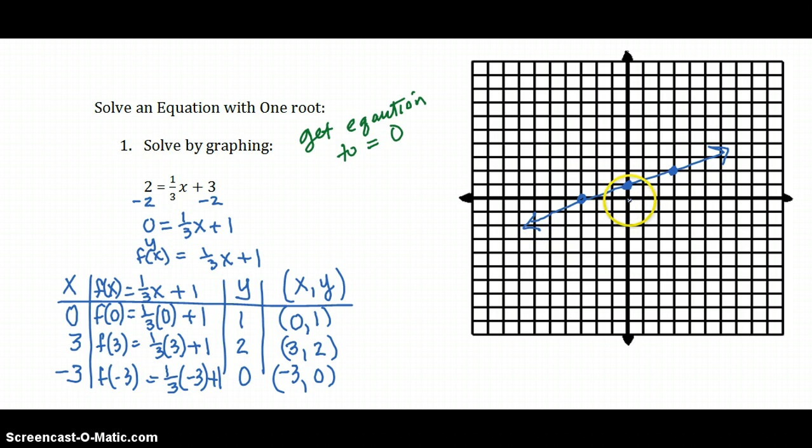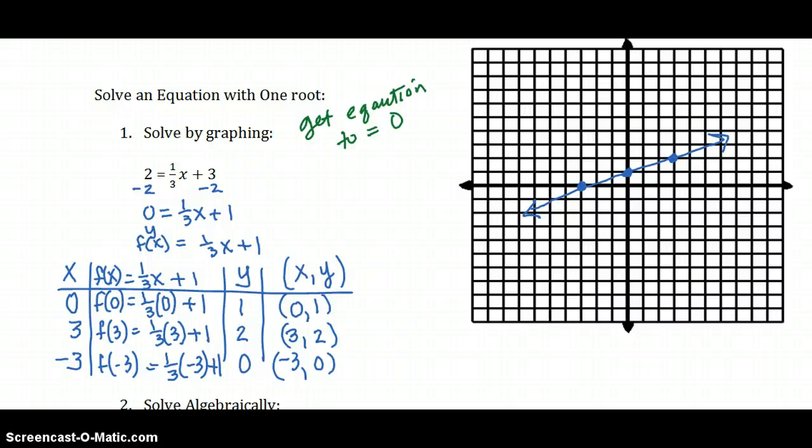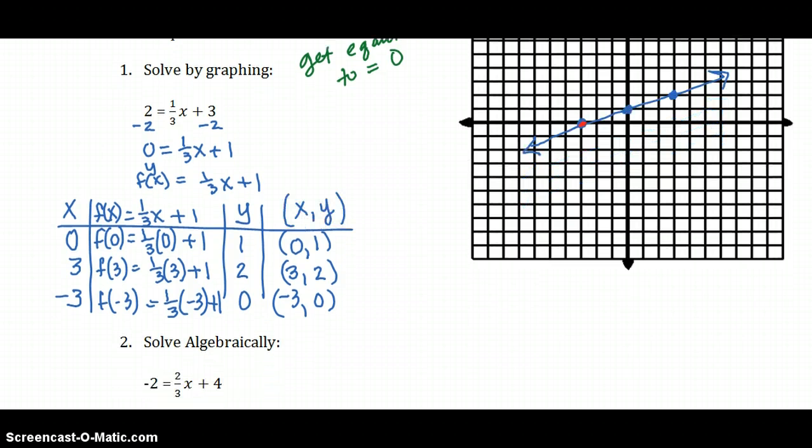Now, how is that related to the parent graph? If you remember, the parent graph passed through 0, 0. This one moved up 1. It's going to hit the y-axis at a positive 1. What is its solution or what is its root? Where did it pass through the x-axis? At negative 3. So our solution to this function, after graphing it, is negative 3.